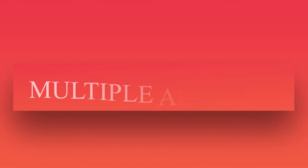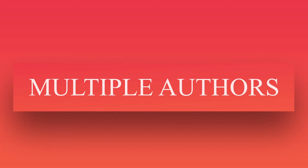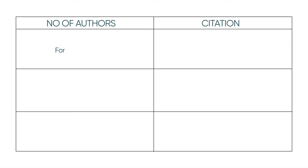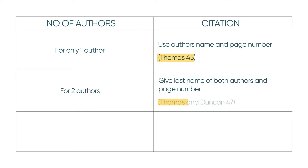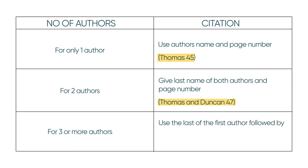When the paper you are citing has many authors, you can cite as shown here. For one author, use the author's name and page number. For two authors, give the last names of both authors and the page number. For three or more authors, use the last name of the first author followed by et al., then the page number.